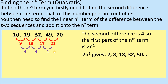So we're now going to write the sequence of 2n squared. The n squared sequence is effectively your square numbers: 1, 4, 9, 16, 25. But of course we've got 2 of them, so 2n squared gives us the sequence 2, 8, 18, 32, 50. We write those down and that forms the basis of our quadratic sequence.